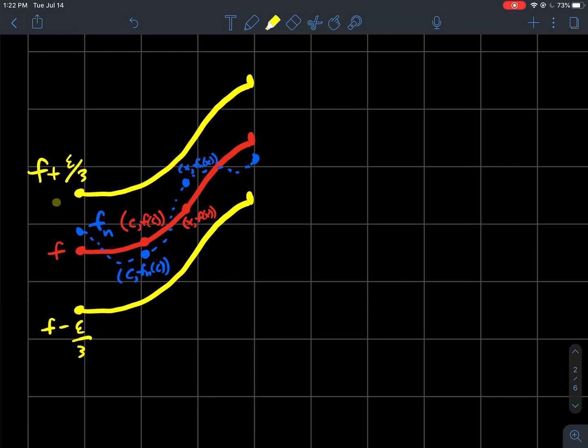And then the next thing that I want to notice is I know that each fn is continuous, so I could make sure that I choose x and c close enough to each other to make sure that the difference in the corresponding y values, so the difference in the y values between this blue point and this blue point is less than, or I guess is still smaller than the length of this window.